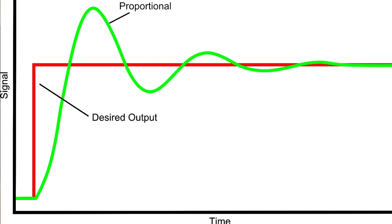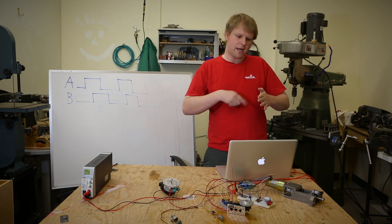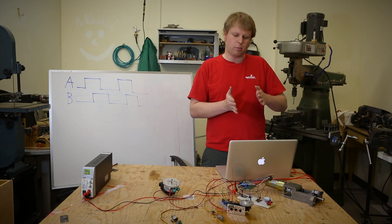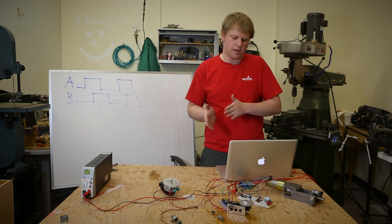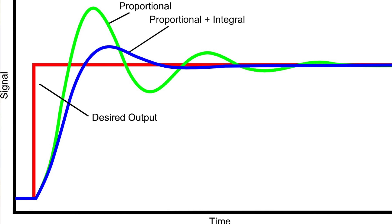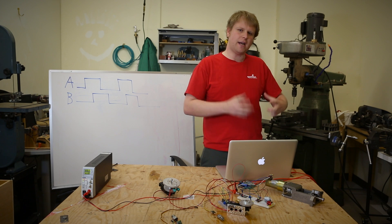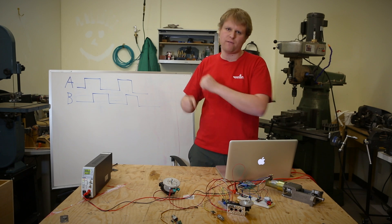Proportional is what we would consider a first-order correction. It's the difference between where I want to be and where I am, and we've applied some constant to bring it back into the correct place. The integral is taking the sum of the errors. So if we've been wrong for two or three measurement cycles, it adds those up and tries to get us to the next point even faster. This is useful if your proportional control segment isn't quite dampening fast enough.